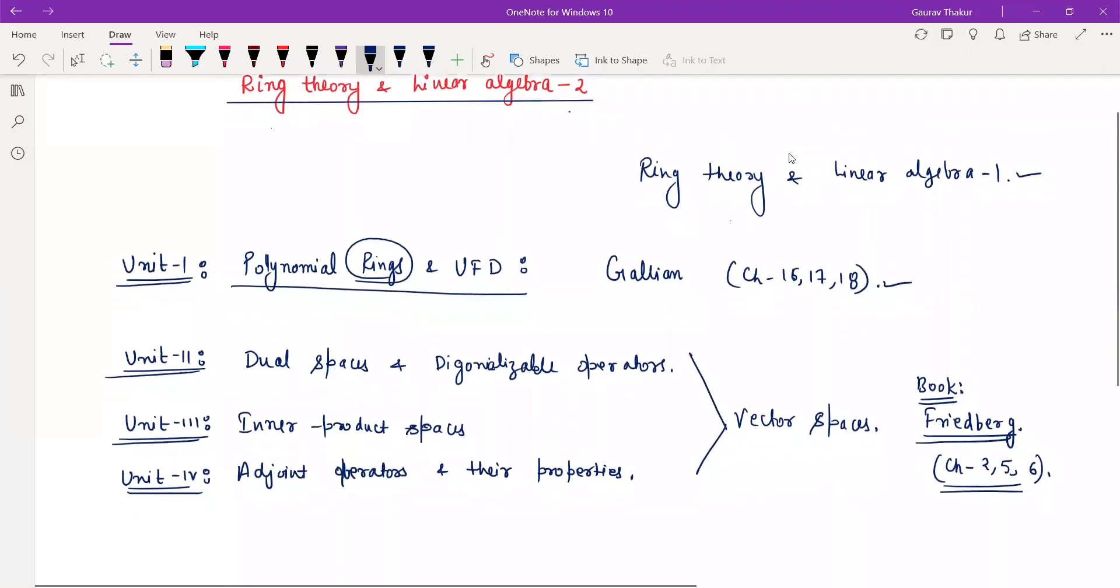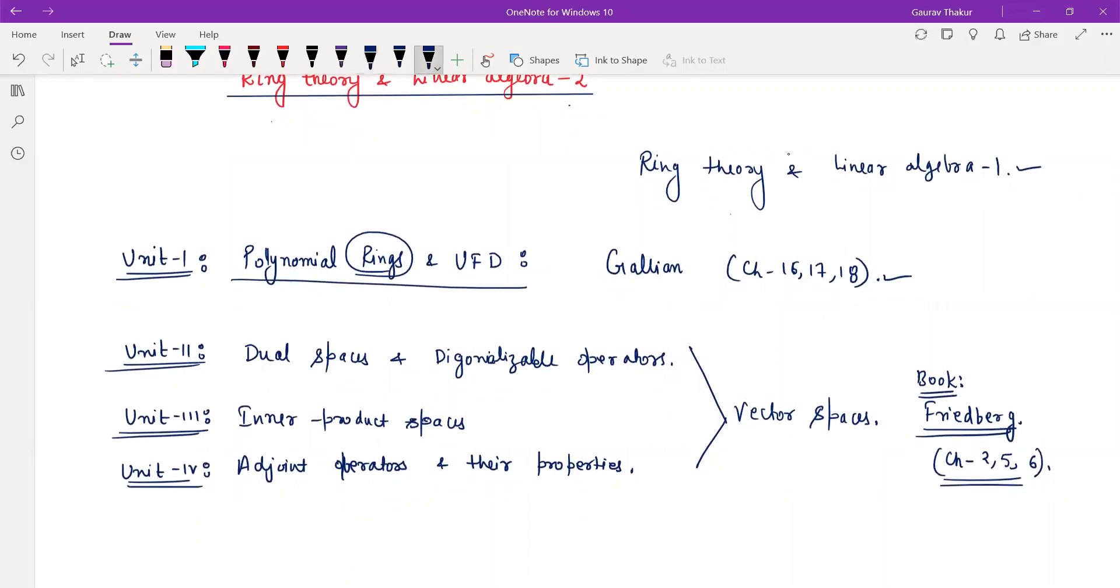Now if I am talking about the approach which we are going to use for this paper, we will target unit first, polynomial rings and UFD, and then we will start our unit third, inner product spaces, and then unit second, and then unit fourth. So this is how we are going to approach this paper.